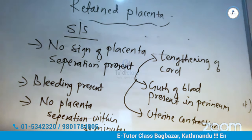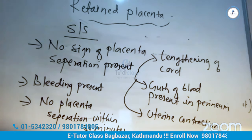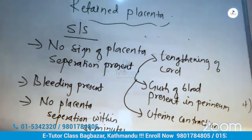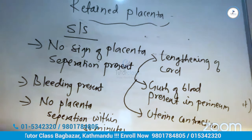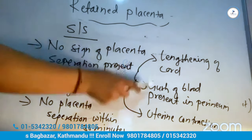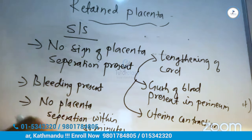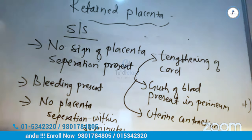There is no sign of placenta separation present. Placenta separation has 3 classic signs. If you think about how to identify placenta separation, the first sign is lengthening of the cord.